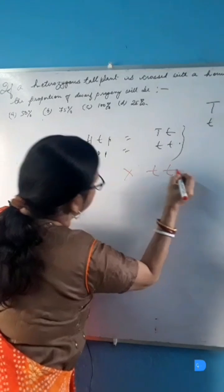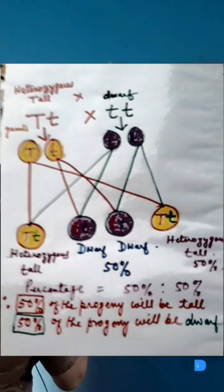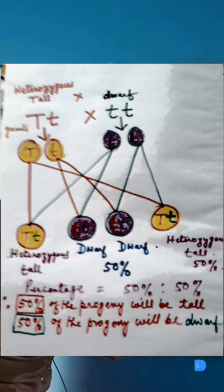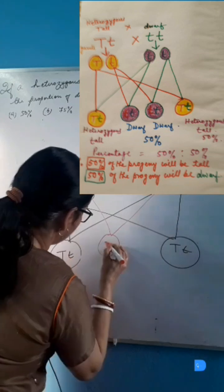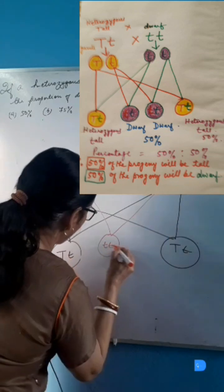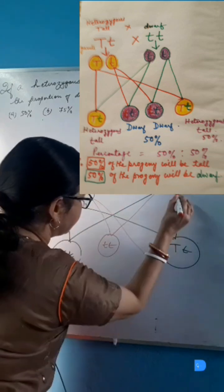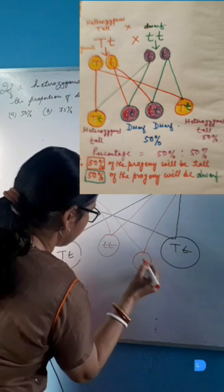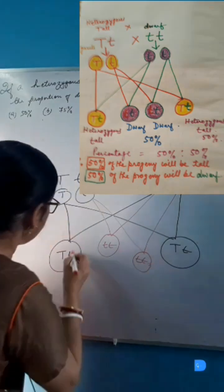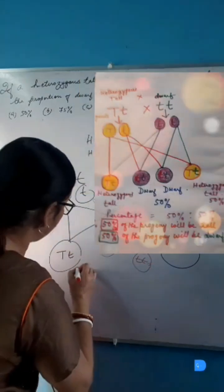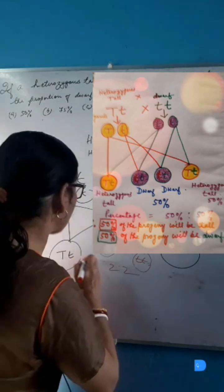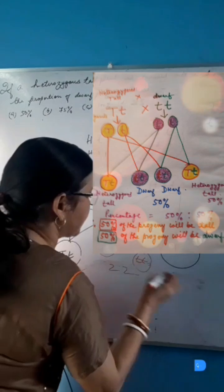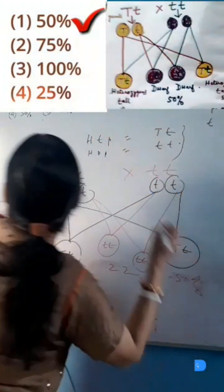Crossing the heterozygous tall plant (Tt) with the homozygous dwarf plant (tt) produces T and t gametes from the tall plant and t and t from the dwarf plant. The resulting offspring are two heterozygous tall plants (Tt) and two homozygous dwarf plants (tt). The percentage of heterozygous tall and homozygous dwarf plants is each 50%.